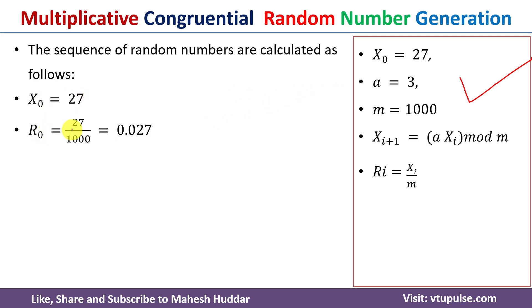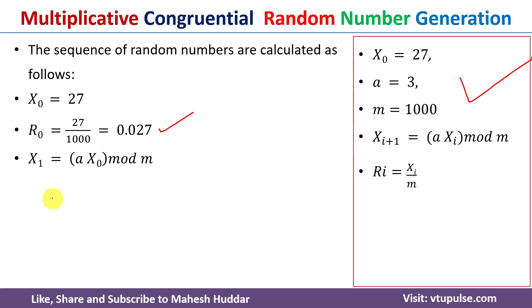R₀ = X₀ / m. Here X₀ is 27 and m is 1000, so 27 divided by 1000 equals 0.027. This is the first random number.